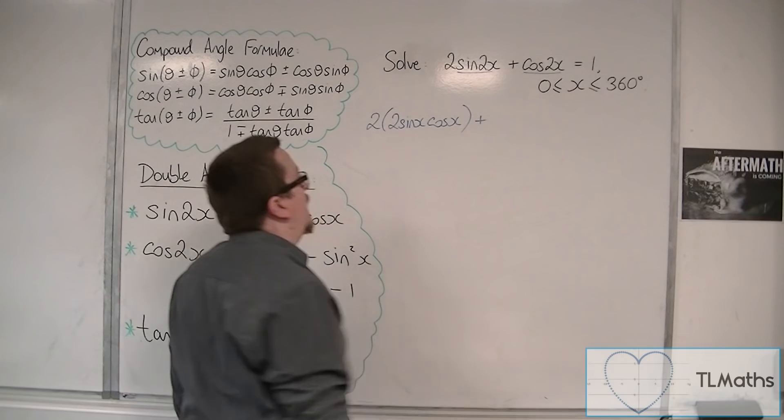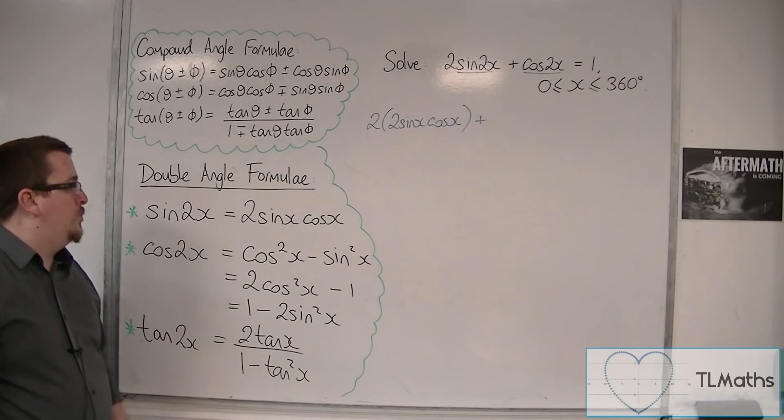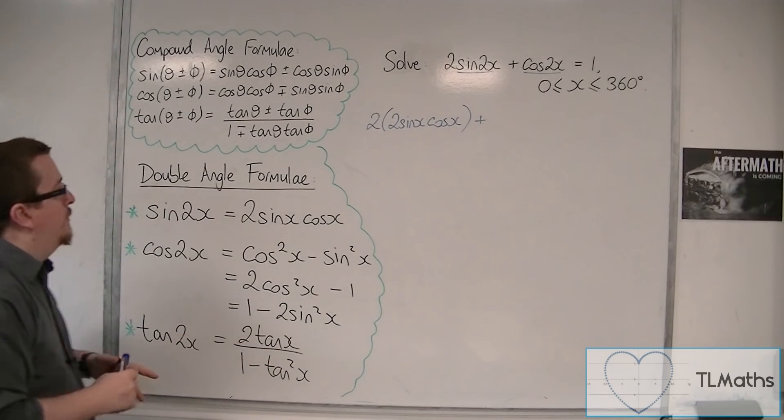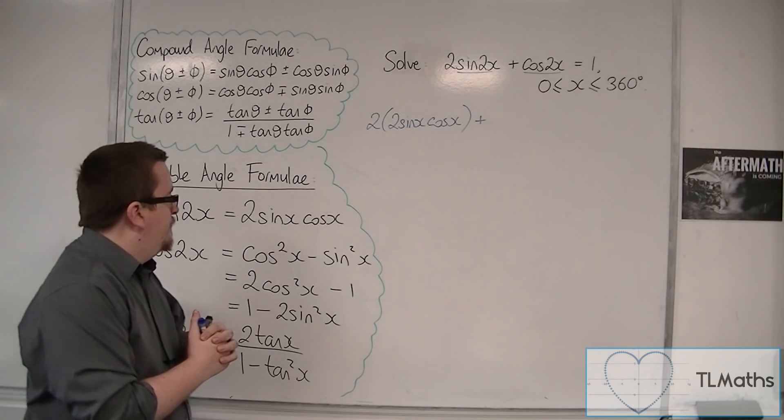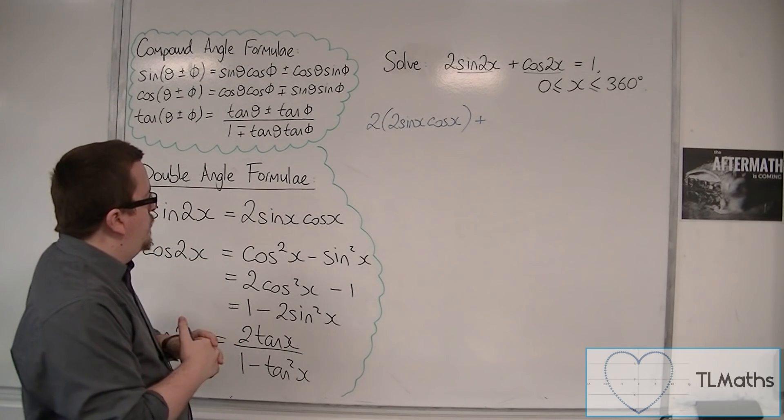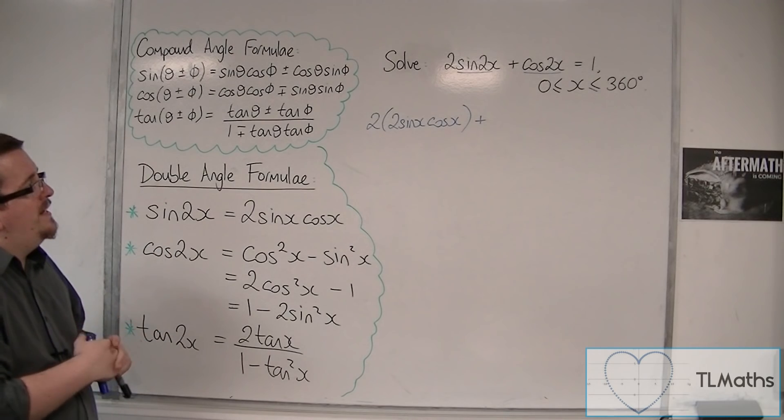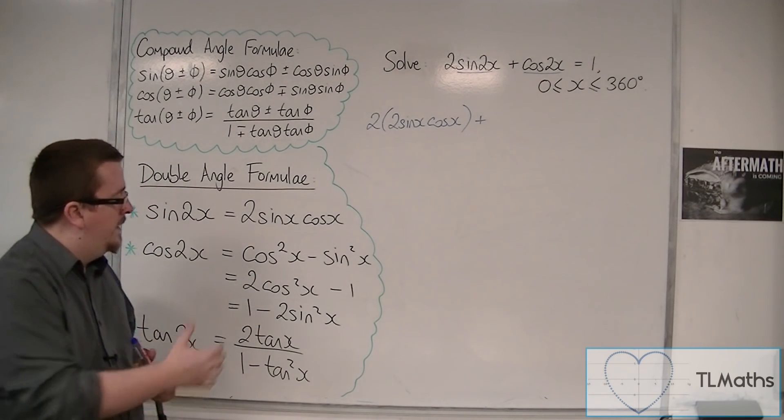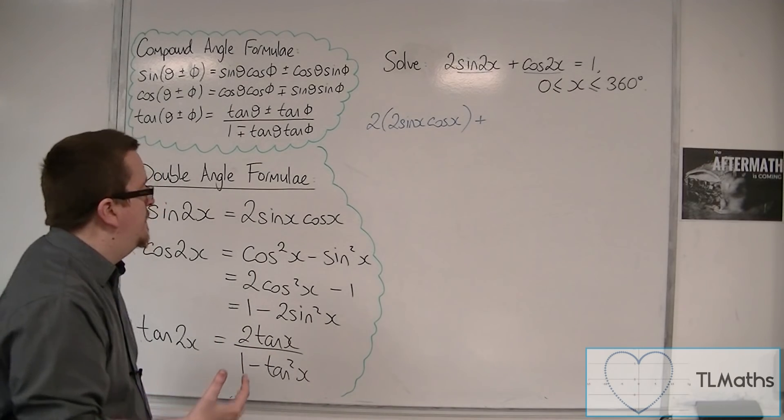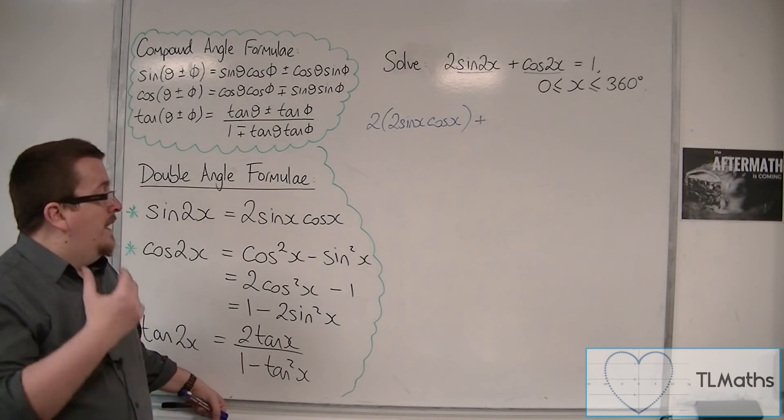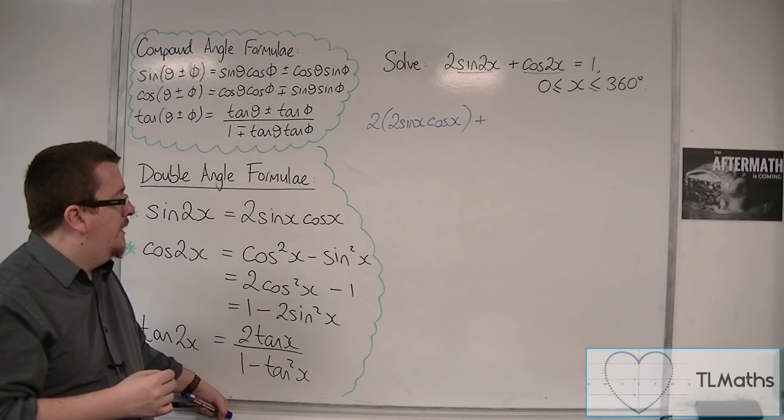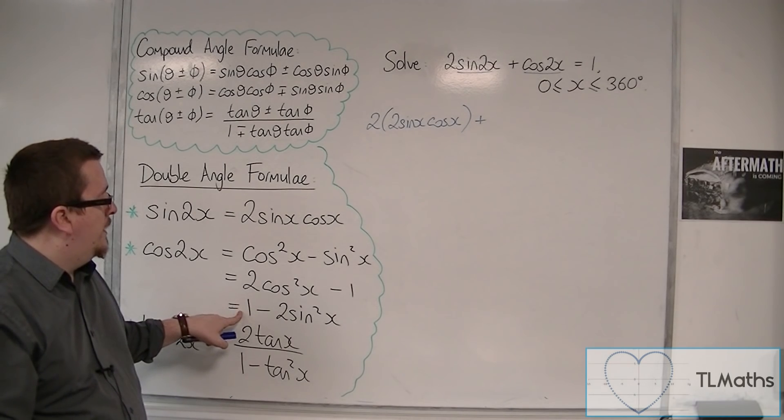Now we've got this cos(2x). I've got three options here. Now, which one to choose? Well, as I've said in the previous video, the cos²(x) - sin²(x) doesn't really get used that much. It's really these two here: the 2cos²(x) - 1 and the 1 - 2sin²(x). Now, which of these to choose? Ultimately, it is up to you.